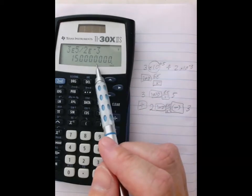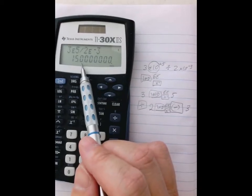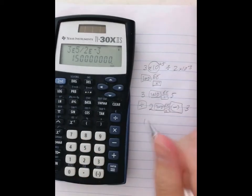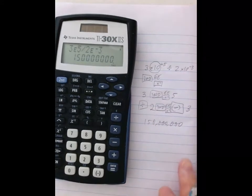So you could count the zeros. 1, 2, 3, 4, 5, 6, 7 zeros. So it's 1.5 with 7 zeros. Put in the commas and write your answer that way.